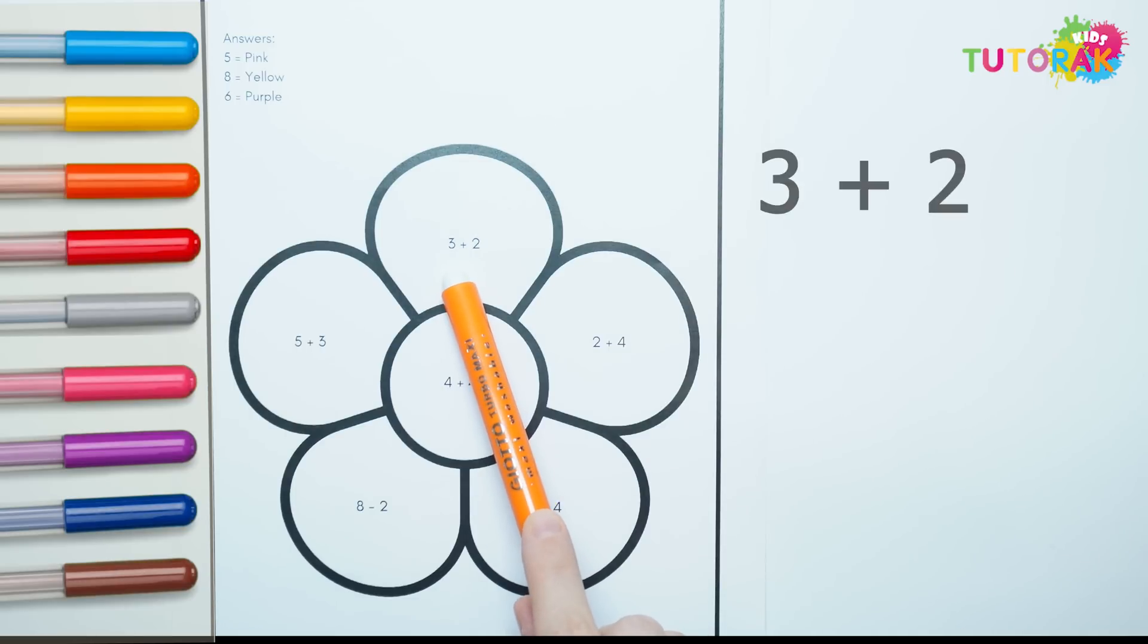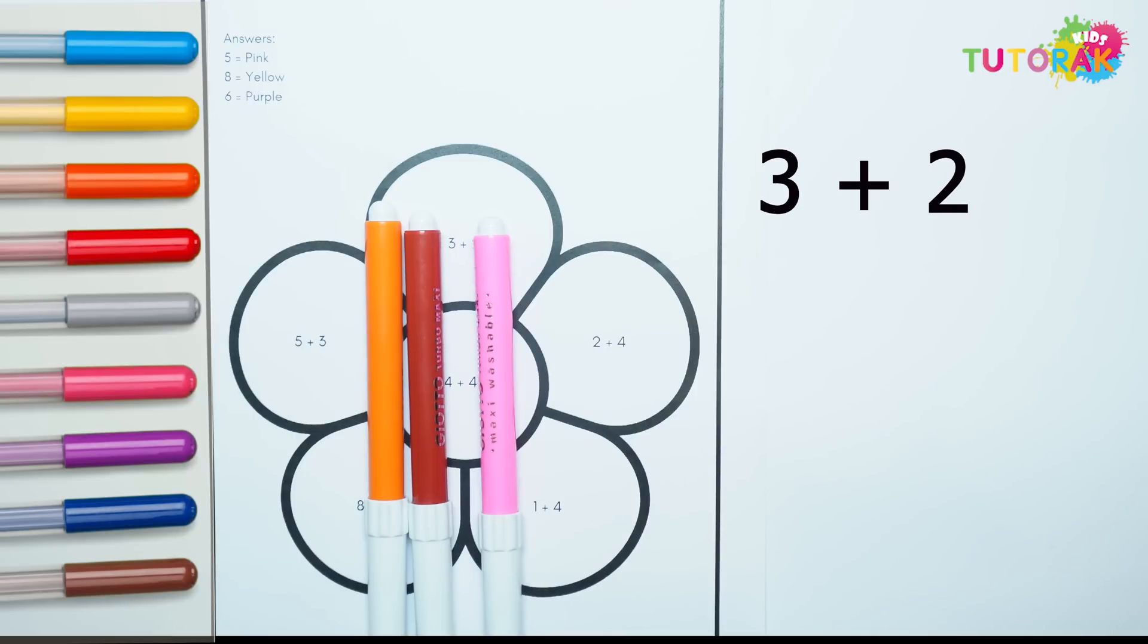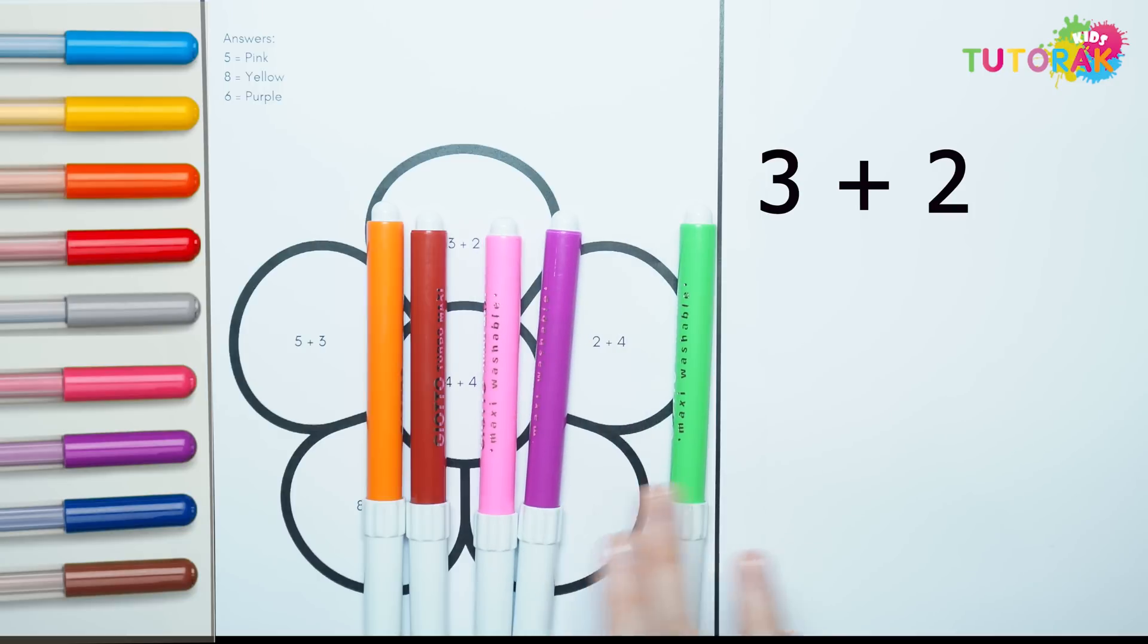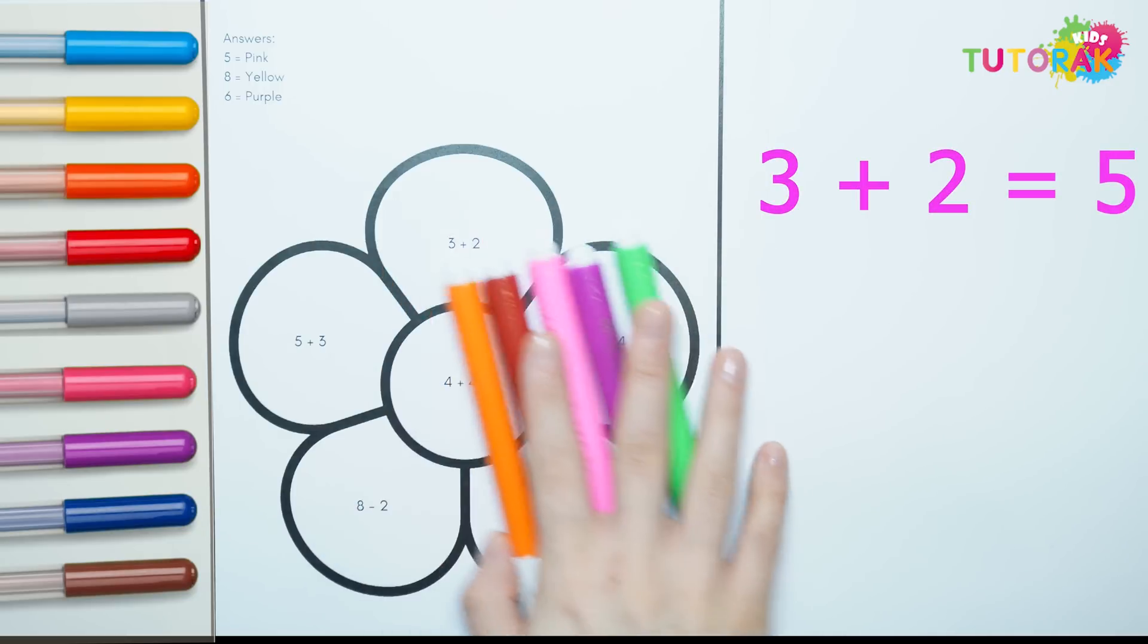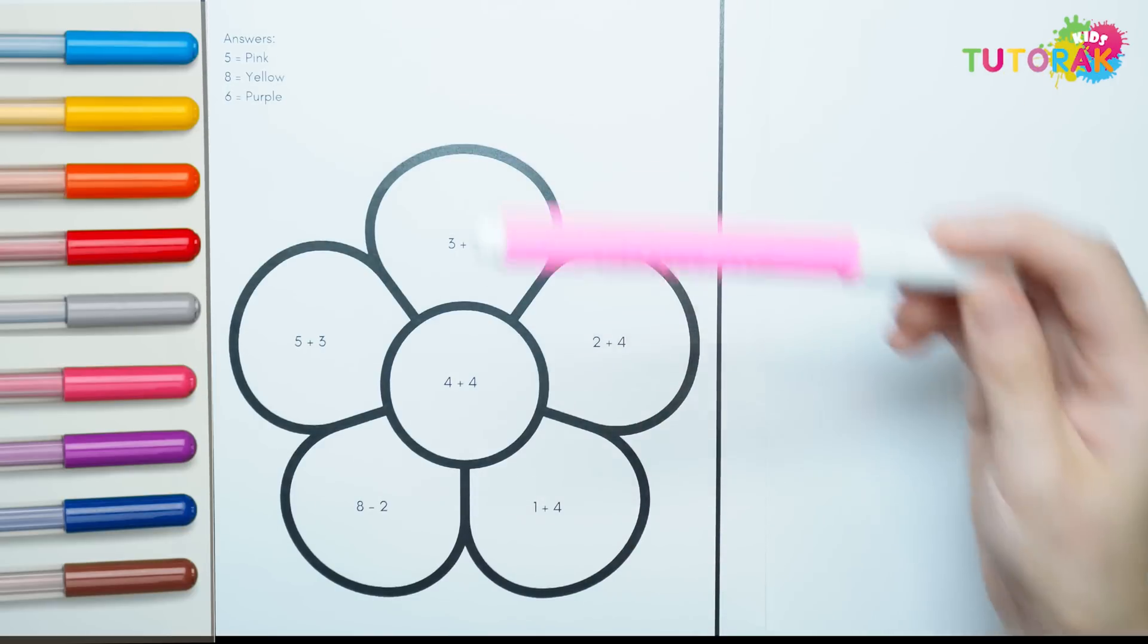3 plus 2. Let's count using pens. 1, 2, 3, plus 1, 2. Now we have 1, 2, 3, 4, 5. 5 pens. That's color pink.